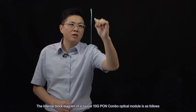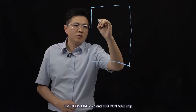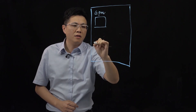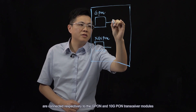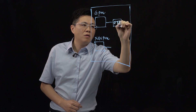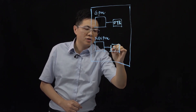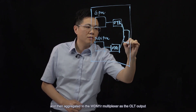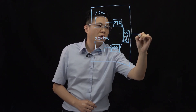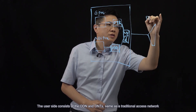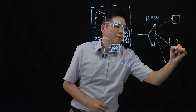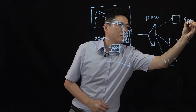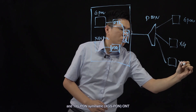Next, let's see the technical principles of 10G PON Combo. The internal block diagram of a typical 10G PON Combo Optical Module is as follows. The GPON MAC Chip and 10G PON MAC Chip are connected respectively to the GPON and 10G PON transceiver modules, and then aggregated to the WDM-1R multiplexer as the OLT output. The user side consists of the ODN and ONTs, same as a traditional access network. The 10G PON Combo can connect three types of ONTs: GPON ONT, 10G PON Asymmetrical ONT, and 10G PON Symmetric ONT.